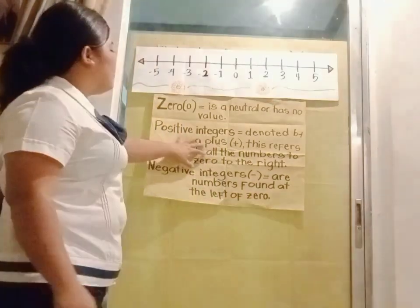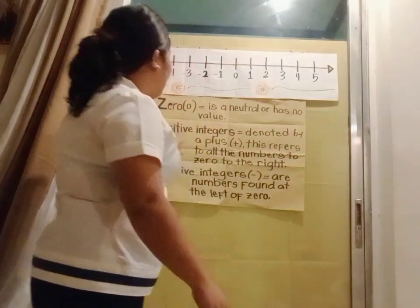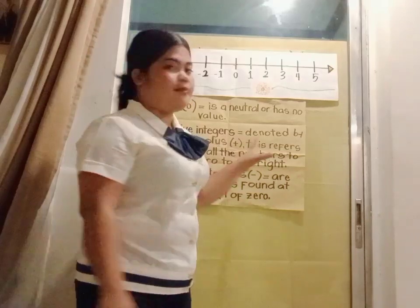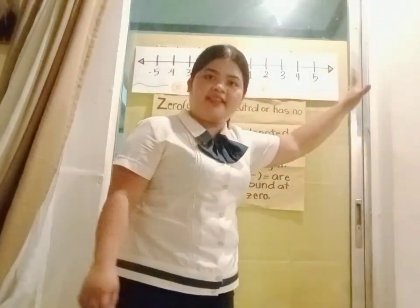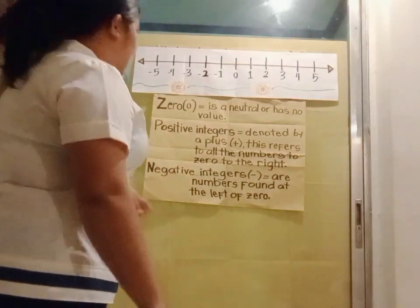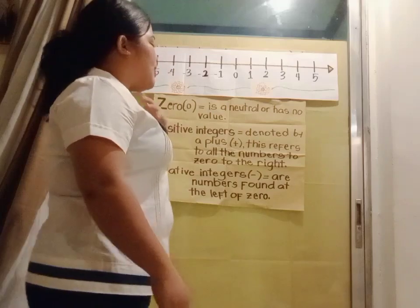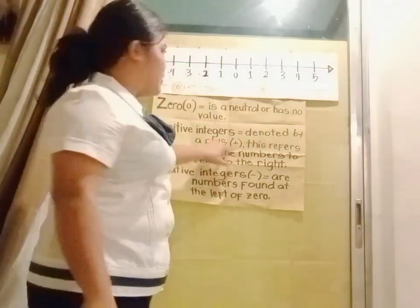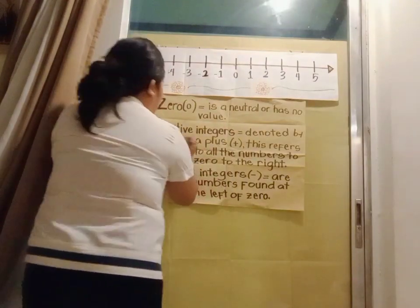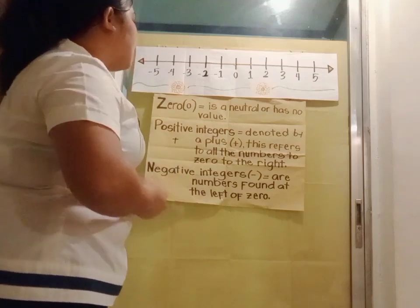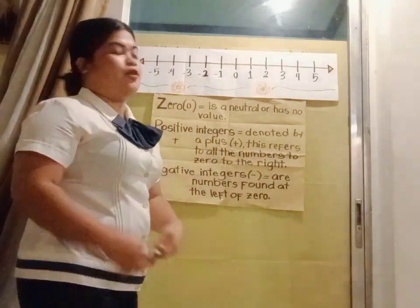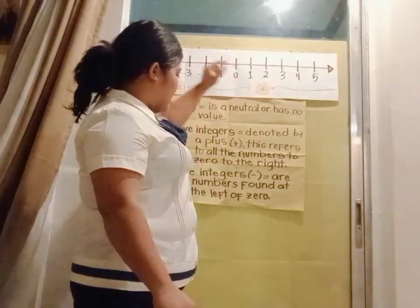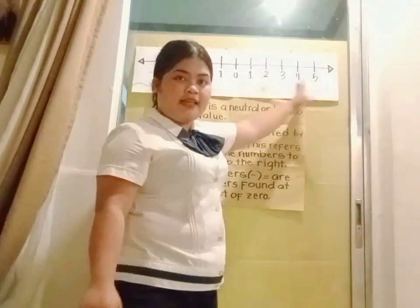The second part of the number line is the positive integers. Positive integers can be seen on the number line: 1, 2, 3, 4, 5, 6, 7, 8, 9, 10, and so on. Positive integers are denoted by a plus sign and refer to all numbers to the right of zero.